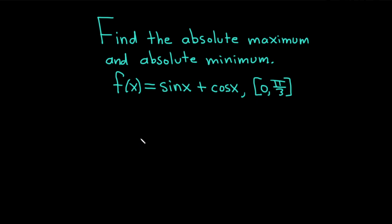Hello, in this video we're going to find the absolute maximum and absolute minimum of the function f of x equals sine x plus cosine x over the interval 0 comma pi over 3. f of x is a continuous function because sine and cosine are both continuous and the sum of continuous functions is continuous.